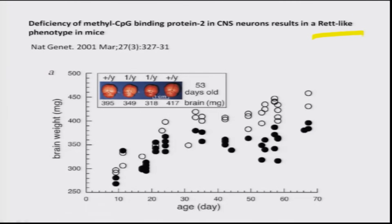One measurable phenotype studied was brain weight. As commonly assessed in babies — where head circumference is measured every six months to monitor normal growth — children with neurological conditions often have smaller head circumference than normal. This study showed that loss of this protein specifically in neurons produced symptoms very similar to the human condition, something impossible to study with global knockout since those embryos die.